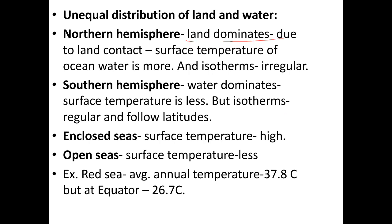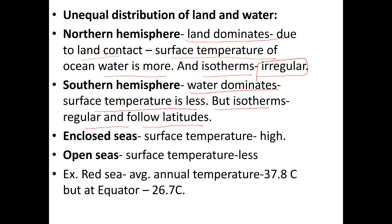In the Northern Hemisphere, land dominates, and due to land influence the surface temperature of ocean water is more and isotherms are irregular. Isotherms are lines joining places of equal temperature. In the Southern Hemisphere, water dominates, surface temperature is less, but isotherms are regular and follow latitudes.